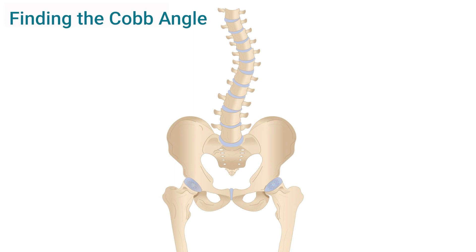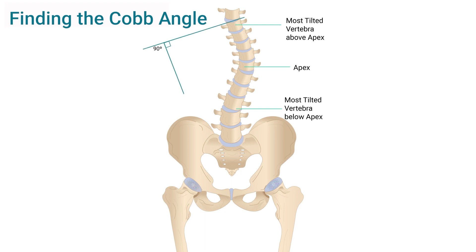The diagram we're showing on screen now shows where you have this twist. Typically this measurement is taken using an X-ray machine, and from the X-ray you measure out at 90-degree angles from the beginning and end of the scoliosis, then find the Cobb angle by taking a small calculation in the middle.